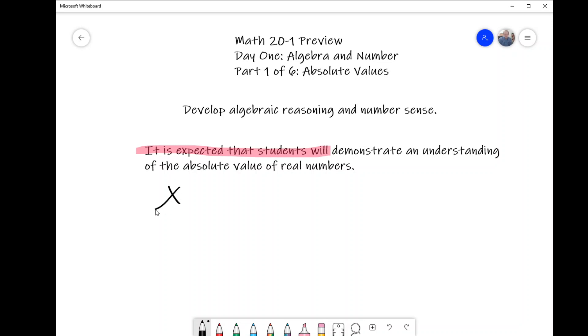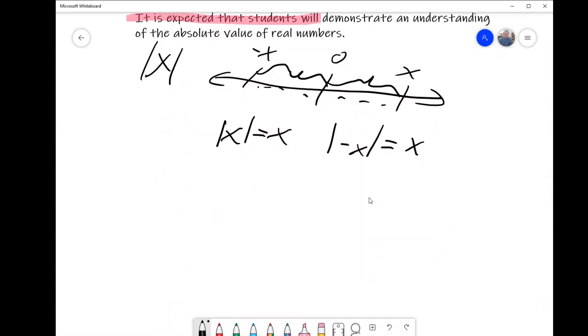The absolute value of a number is how far it is from zero on the number line. So we have x and negative x - they are the same distance from zero on the number line, namely the positive value of x. Therefore, the absolute value of positive x is x, and the absolute value of negative x is also x.